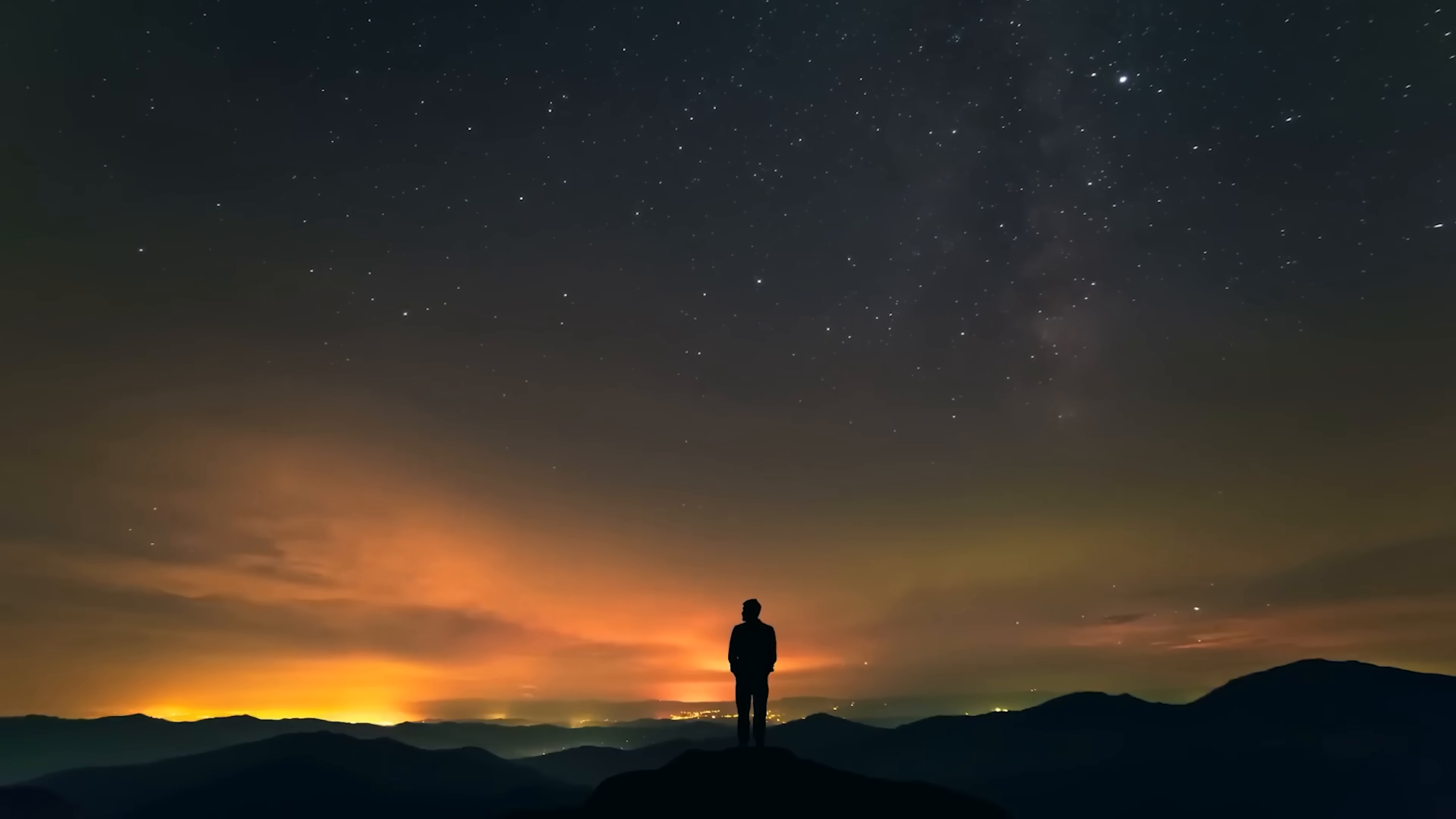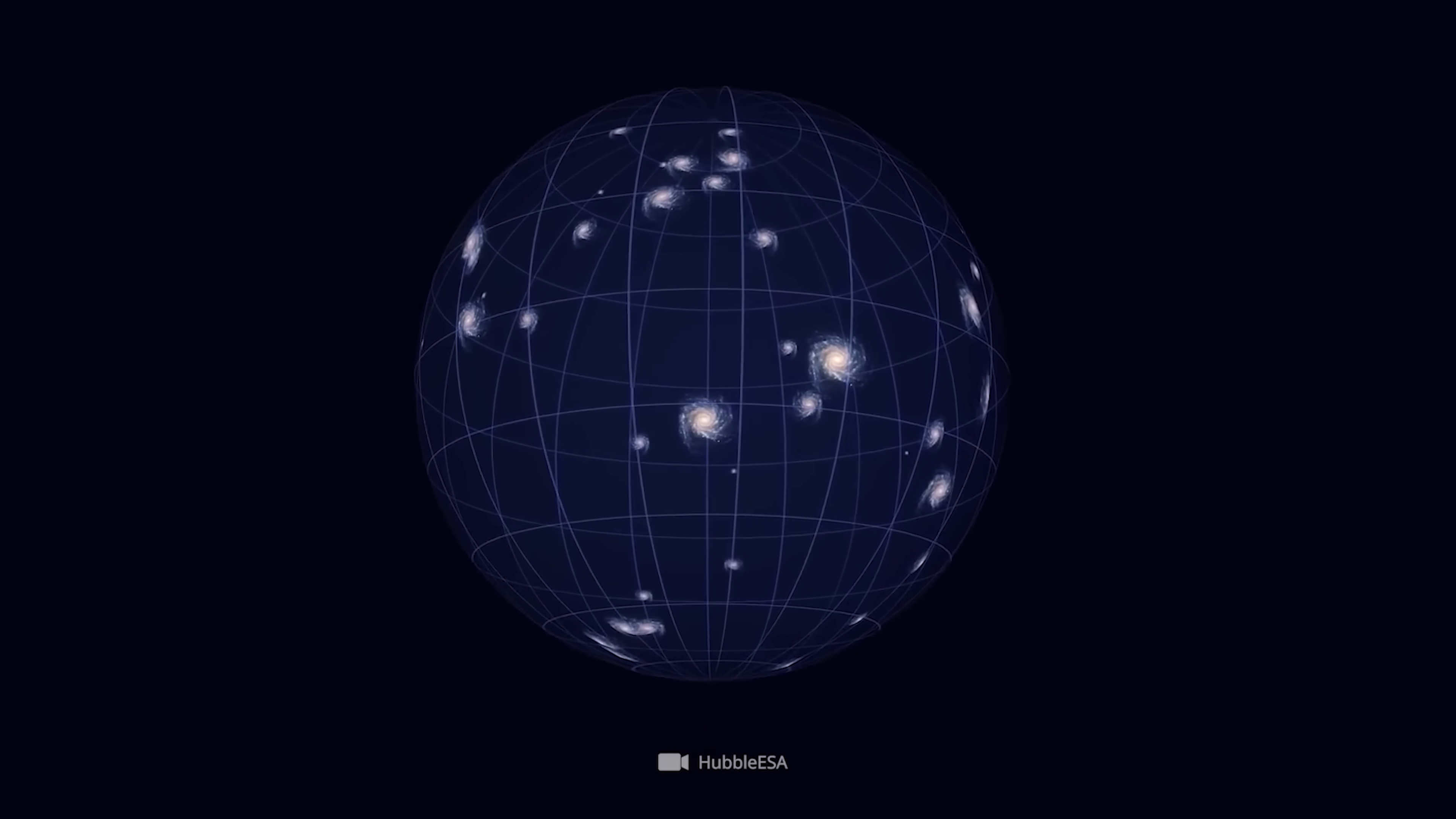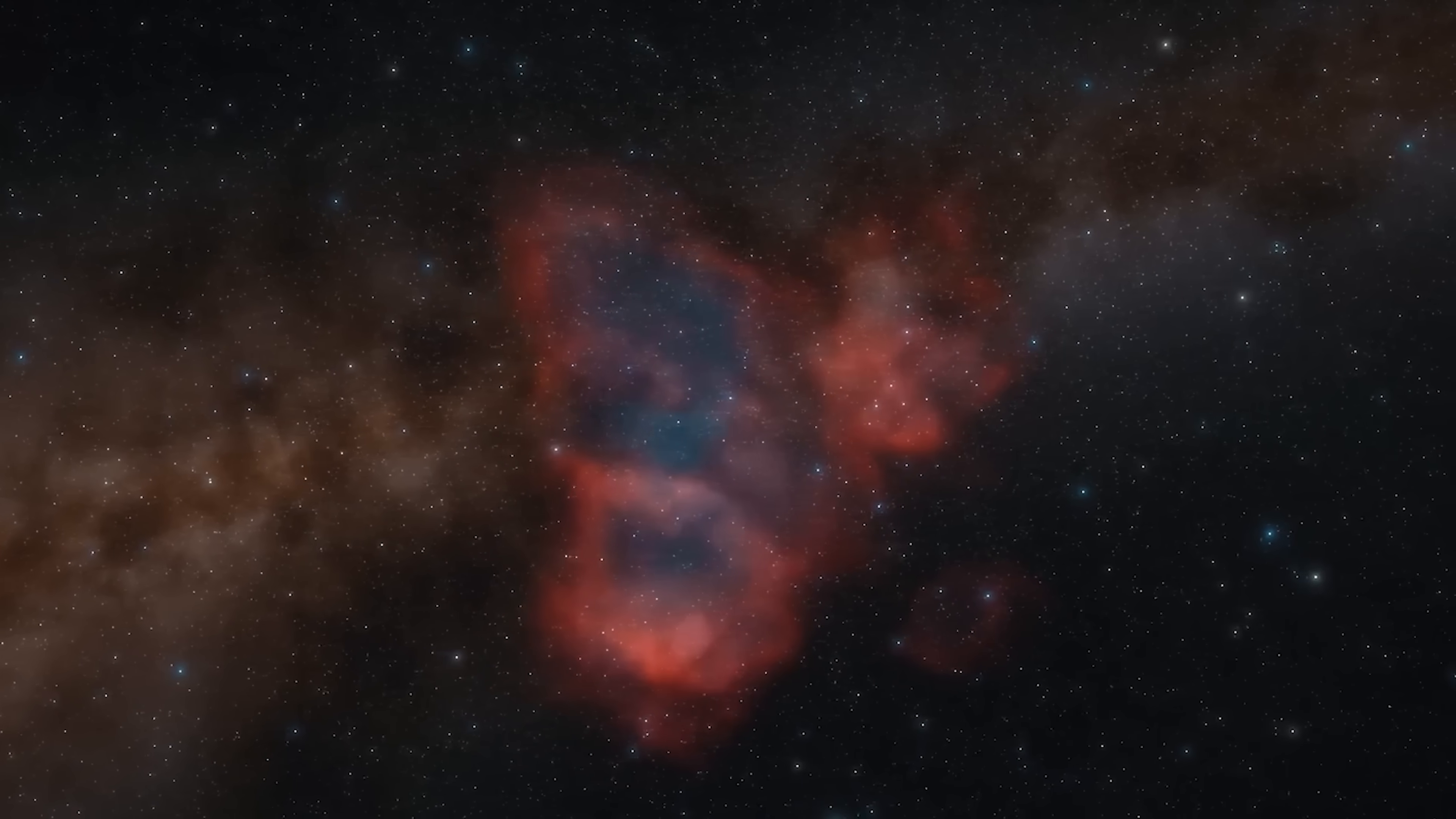This is where things get messy. The Webb telescope has been overturning long-held expectations. Suddenly, researchers are confronting the possibility that foundational ideas about cosmic origins may need rewriting. Creating a galaxy on the scale of the Milky Way, home to roughly 100 billion stars, should require billions of years of gradual assembly. Yet the Webb telescope has spotted six enormous galaxies existing a mere 500 million years after the Big Bang, some of them up to ten times more massive than the Milky Way.